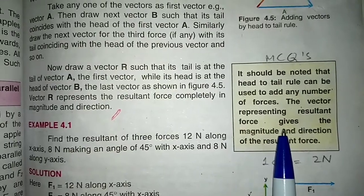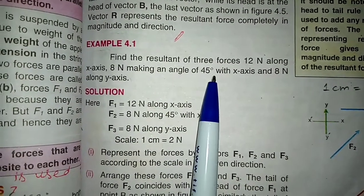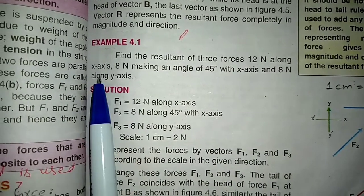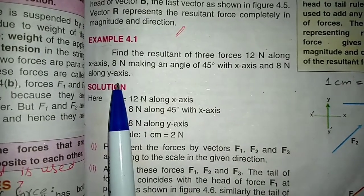Students, we have discussed this. Let's mark this. Next example, 4.1. Find the resultant of 3 forces: 12 newton along x-axis, 8 newton making an angle of 45 degrees with x-axis, and 8 newton along y-axis.